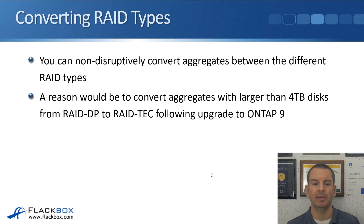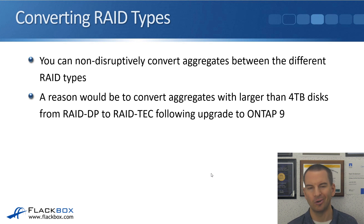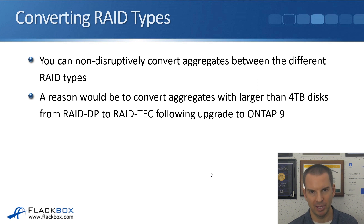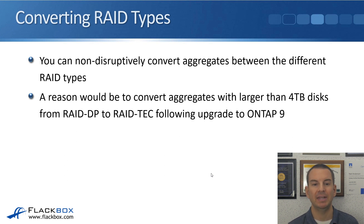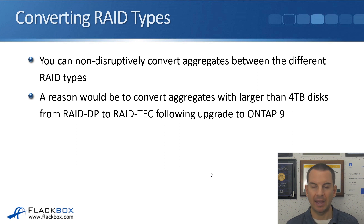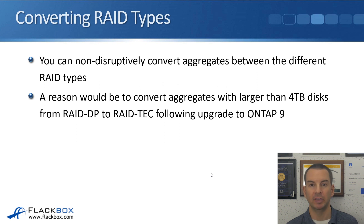You can non-disruptively convert aggregates between different RAID types, though this is not commonly done. Normally you'll know what RAID type you want when setting things up. A reason you might convert is if you were upgrading aggregates with larger than 4TB disks from RAID DP to RAID TEC following an upgrade to ONTAP 9. Back in ONTAP 8, RAID TEC did not exist — NetApp developed it for ONTAP 9 to handle the larger drives becoming available.